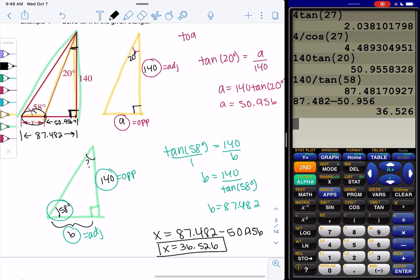And X will be 36.526. And that is section 5.1, solving right triangles. And so we'll continue to use this through some more sections. So make sure you know SOHCAHTOA at the end of this.